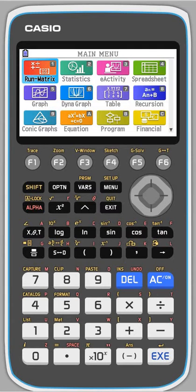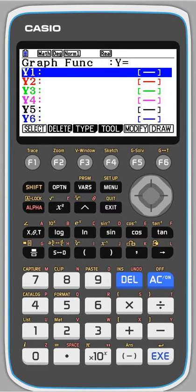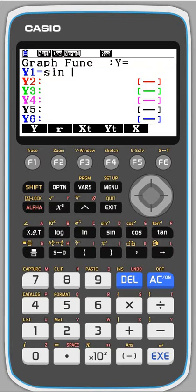I'm going to draw a trig graph on the calculator. We go to the graph menu, menu 5, and then let's do sine of 2x. So we type sine of 2, and the x has to be the x just below the alpha. Execute.